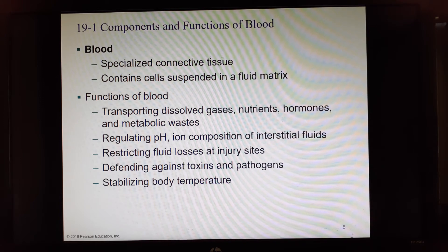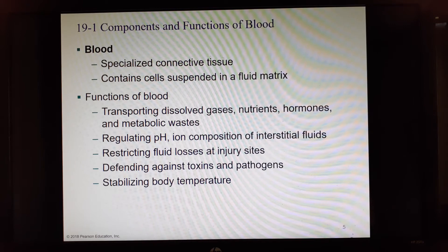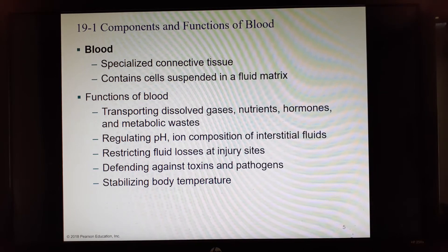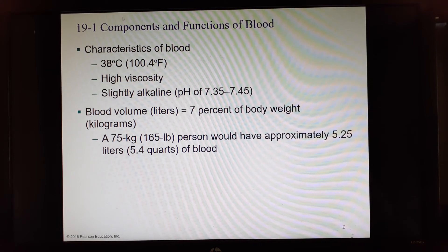Most of the time blood cells are floating around your bloodstream, constantly moving. We use blood to transport gases — oxygen and carbon dioxide — as well as nutrients, hormones, and metabolic waste. We also use it to regulate body pH, ion composition, and the composition of interstitial fluids.